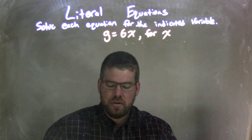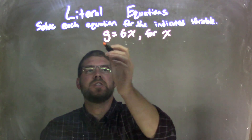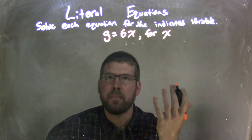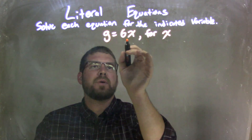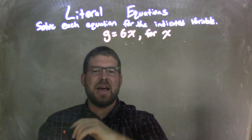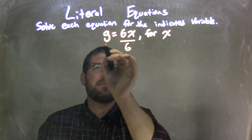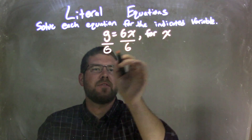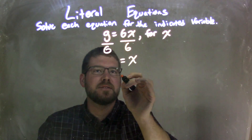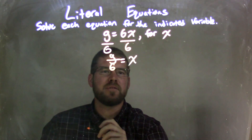So what I need to do is get x by itself. To do that, I can treat g and x as variables — they can be any number. I see there's multiplication between the 6 and the x, so what I'm going to do is divide by 6. There's multiplication, so I divide by 6 on both sides, leaving me with x on the right and g over 6 on the left.